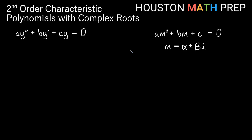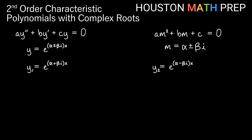Now let's talk through where the general solution form comes from when we get complex roots. Starting with the second-order equation with constant coefficients and its characteristic polynomial, if m is a solution, the solutions are complex conjugates of one another. When we get m, the corresponding solutions are y equals e to the mx. So with both conjugates, that looks like e to the (alpha plus beta i)x and e to the (alpha minus beta i)x. Distributing x and using properties of exponents — adding in the exponent means multiplying with the same base — each splits into a real-valued exponential and a complex-valued exponential.